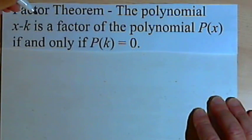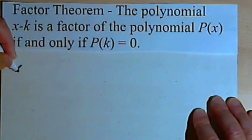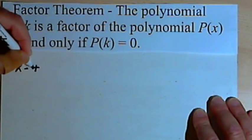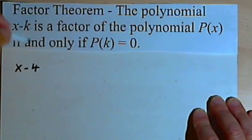So let's try some real polynomials and see if we can figure this out. Instead of x-k, I'm going to say we have x-4. So k and 4 are going to be the same thing.